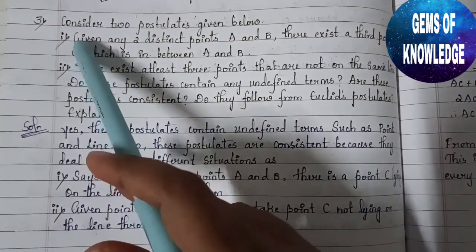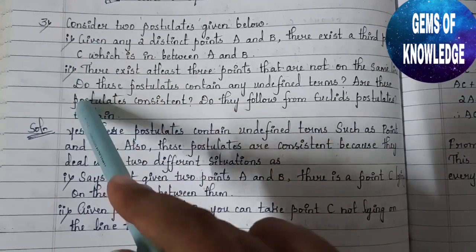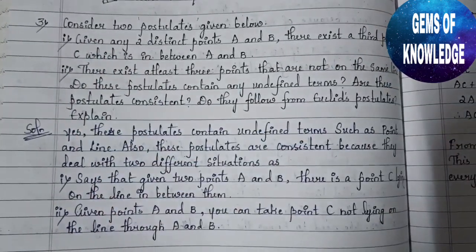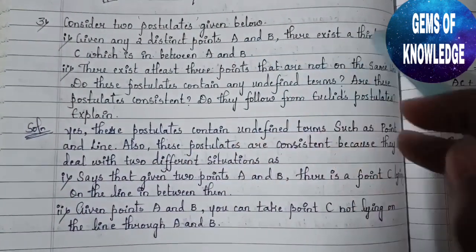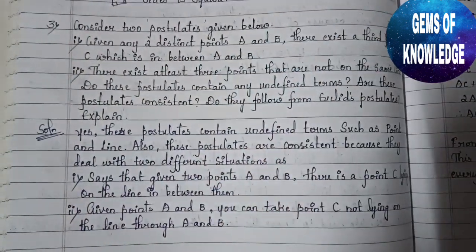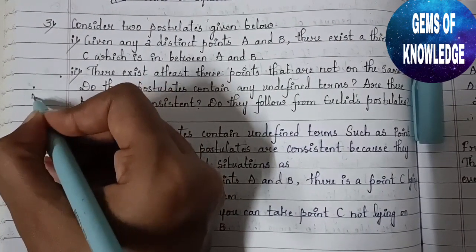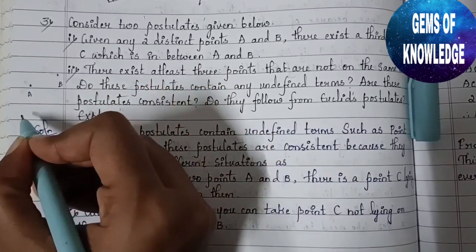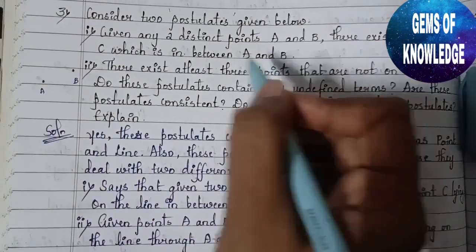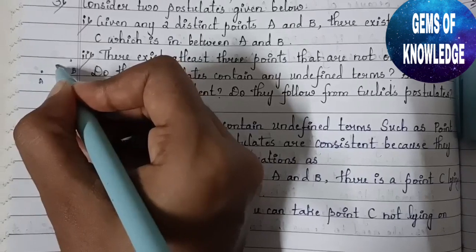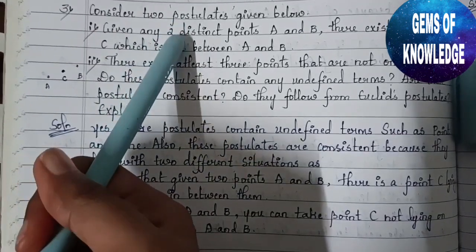The question says: consider two postulates given below. The first postulate states that given any two distinct points A and B, there exists a third point C which is in between A and B. So if this is A and this is B, there exists a third point C lying in between A and B.